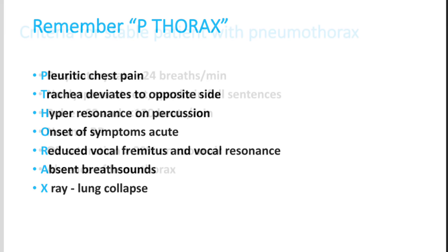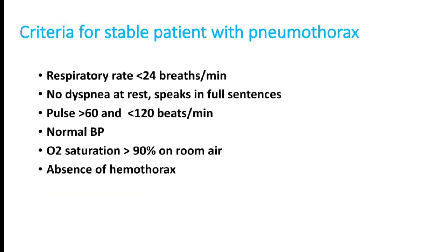Criteria for a stable patient with pneumothorax: respiratory rate less than 24; no dyspnea at rest; speaks in full sentences; pulse rate between 60 and 120 beats per minute; normal blood pressure; oxygen saturation more than 90% on room air; and absence of hemothorax. If these findings are present, the patient is stable and can be shifted to the ward or OPD from the emergency room; otherwise the patient should remain in the emergency room or be moved to ICU.